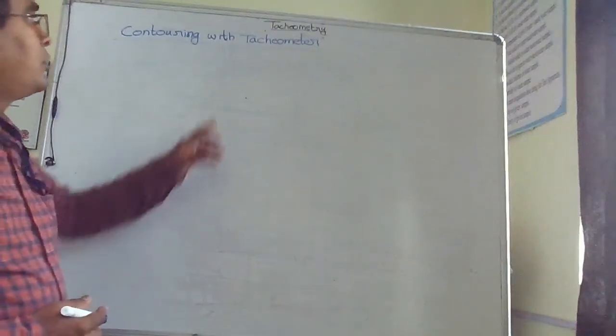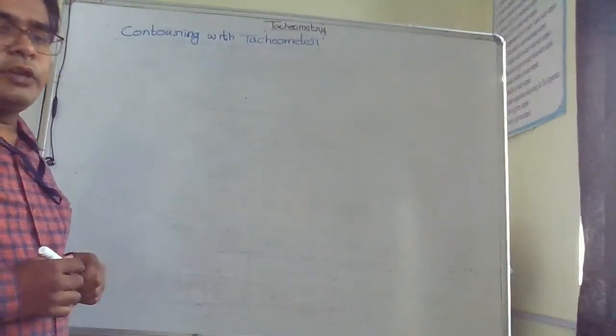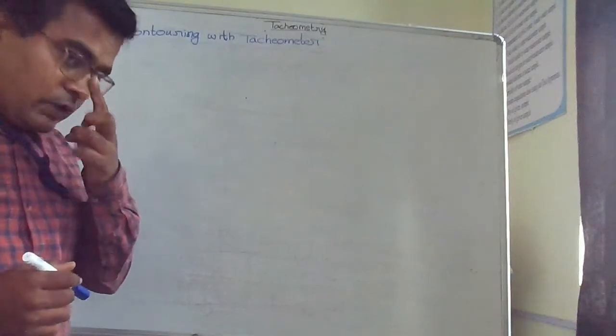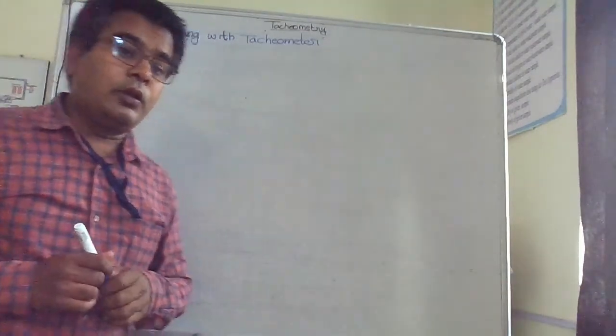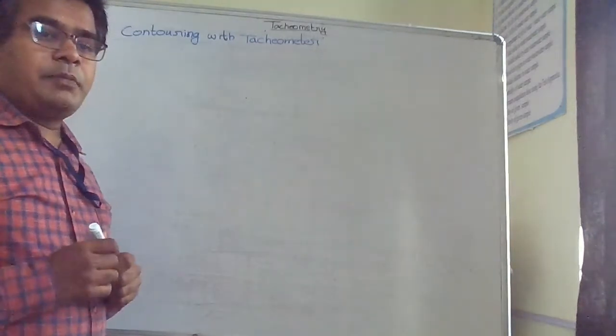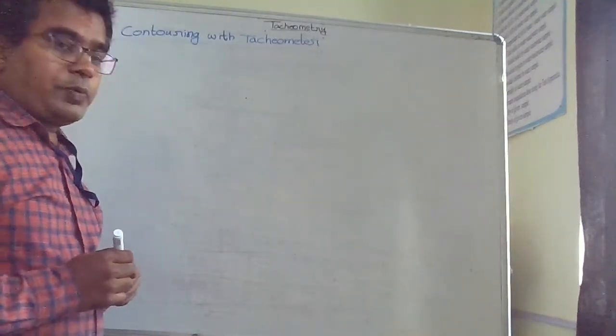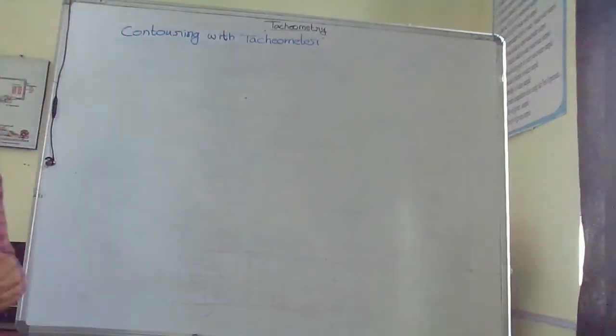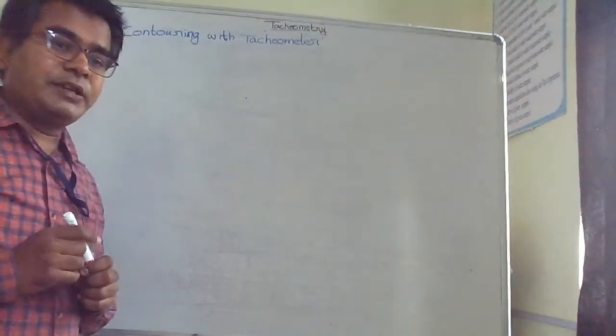Let us discuss the last topic of tachometry: contouring with the tachometer. Contouring is the line passing through points of same RL or equal RL. To prepare a contour map, we need to know the RL of specific points and their distances.